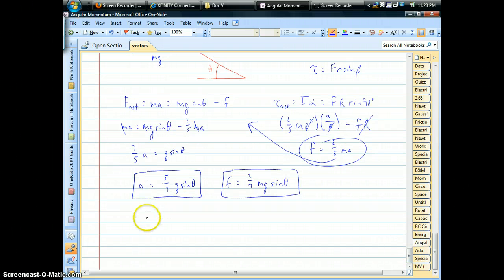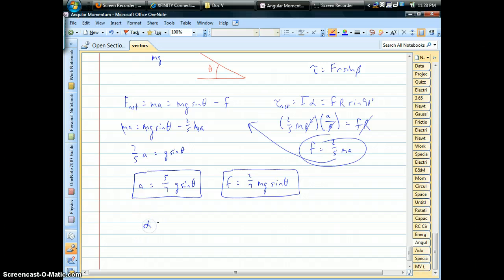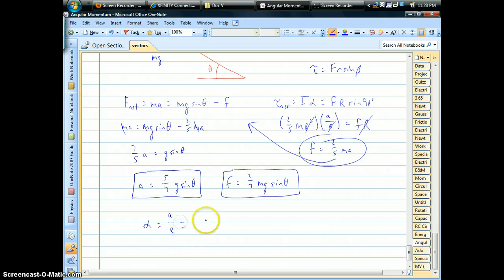When there's no slipping, we could write down alpha. So we're going to just take that linear acceleration term and divide it by the radius of the ball. Okay. No problem.